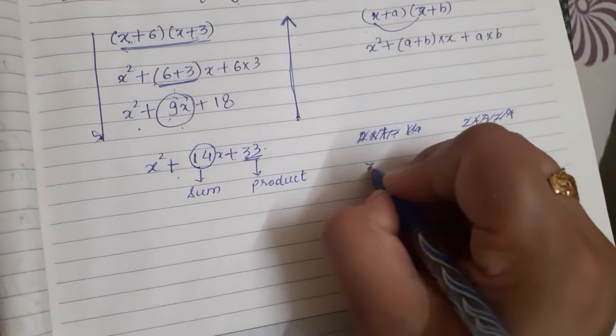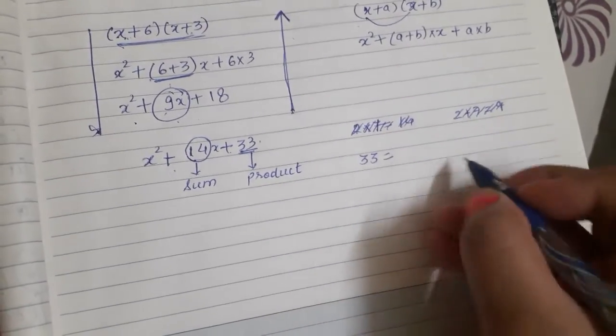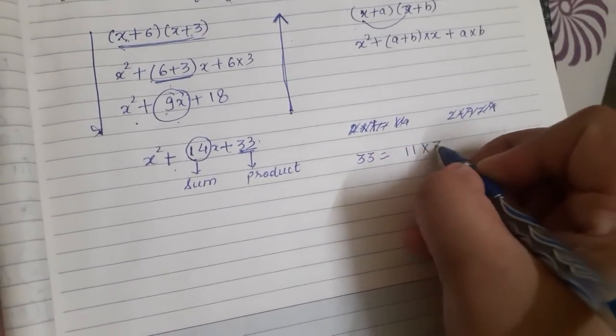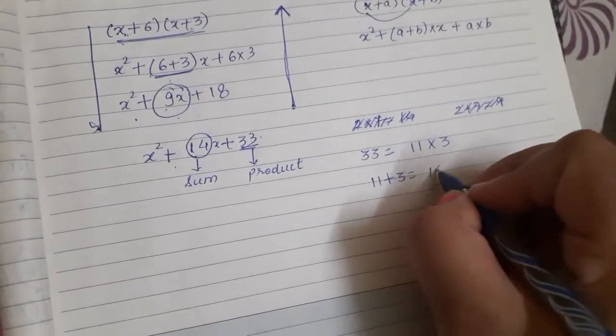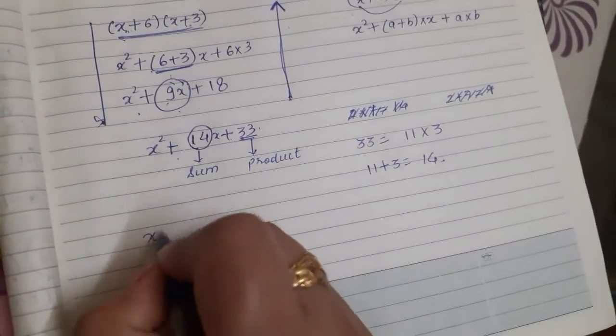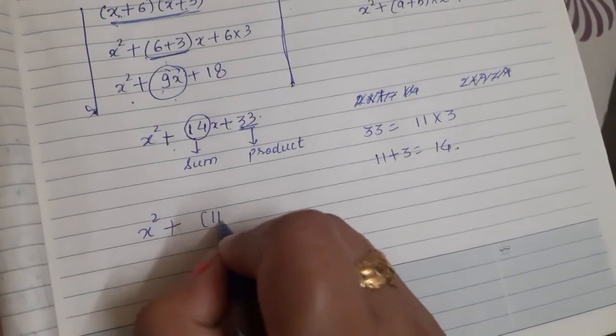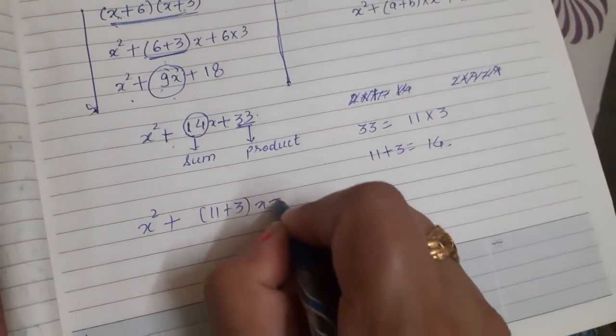So, think about the product. Product is 33. How many times you can get 33? When you will multiply 11 by 3. And when you will sum 11 and 3, that will give us 14. So, we will break 14 as 11 plus 3, x plus 33.